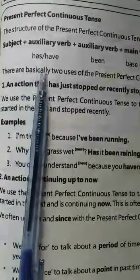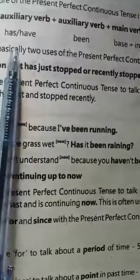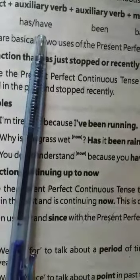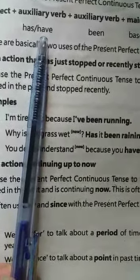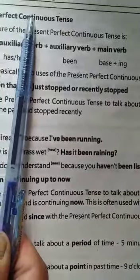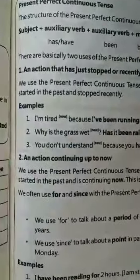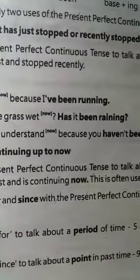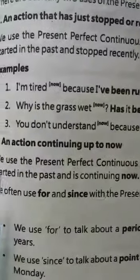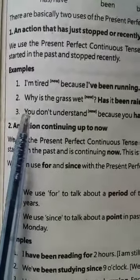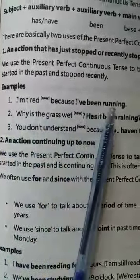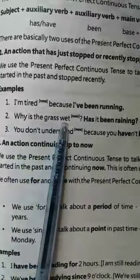We use 'has been' with singular subjects except 'I,' and we use 'have been' with all plural subjects including 'I.' This tense describes an action that started in the past and is still in a continuous process. Example: 'I am tired because I have been running.' Another example: 'Why is the grass wet? Has it been raining?'